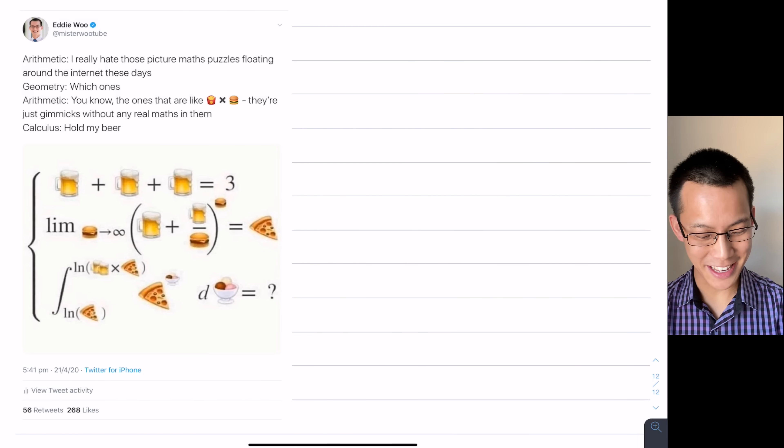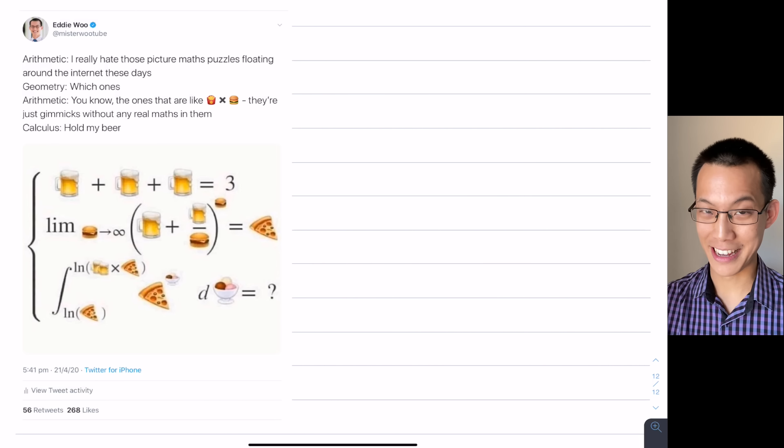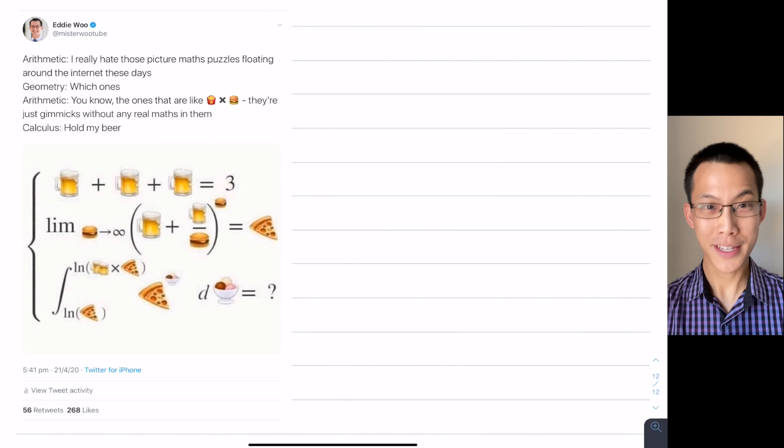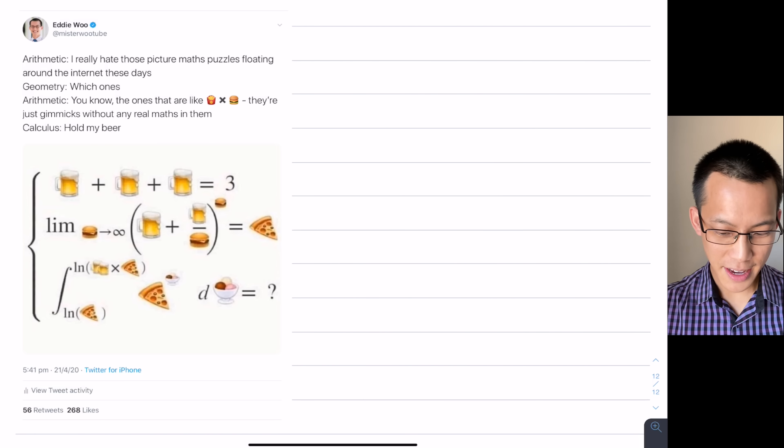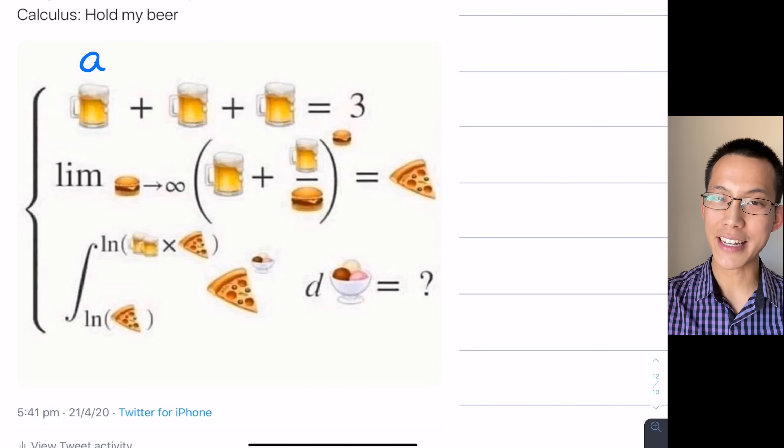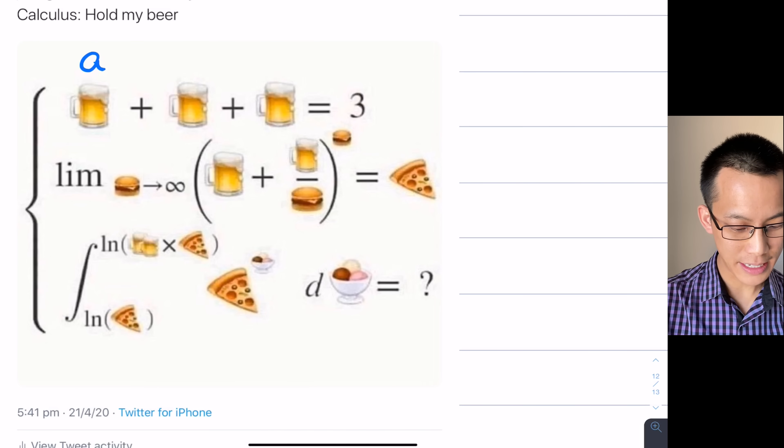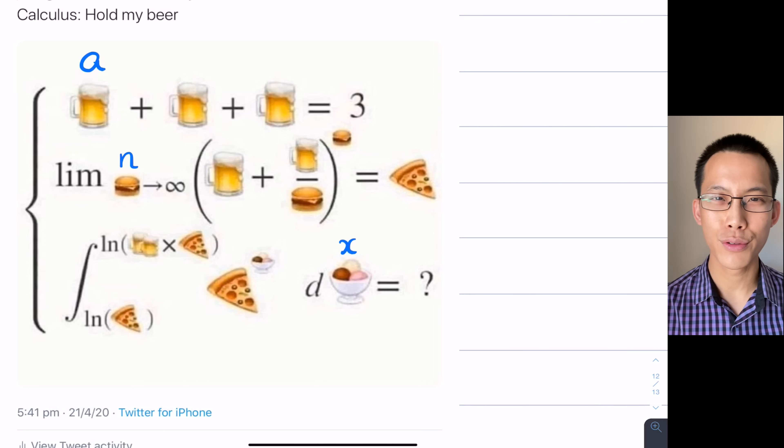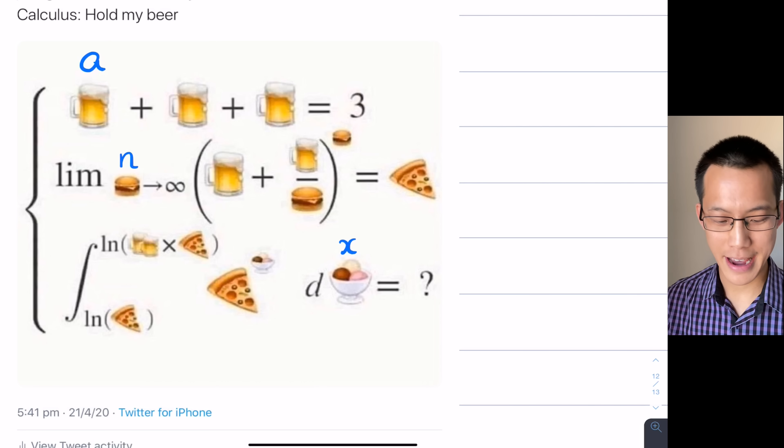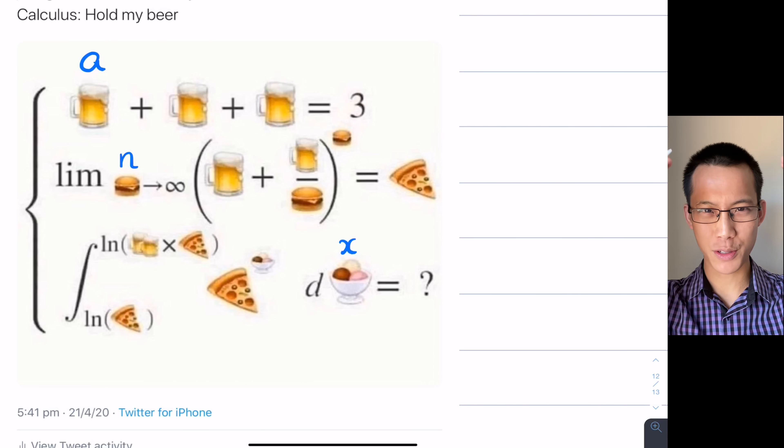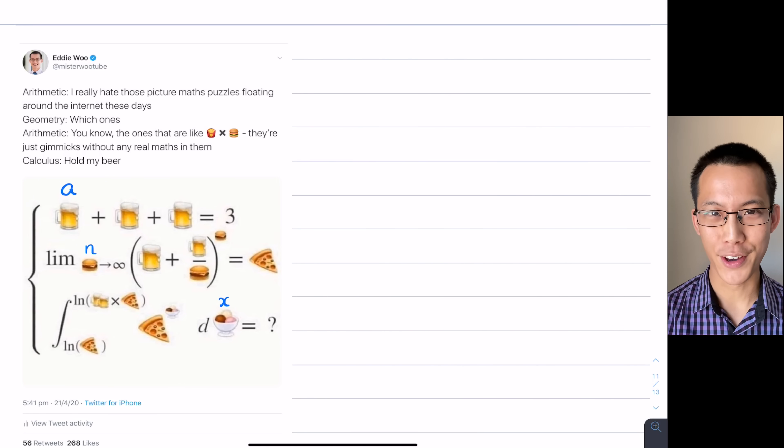Now to start with, what I'm going to do is rather than see all this emoji here, I am going to be like a normal mathematician. I'm going to replace all these symbols with much simpler symbols. Instead of the beer icon, I'm going to use the letter A. Instead of the hamburger, I'm going to use the letter N. Instead of that ice cream you can see down the bottom, I'm going to use the letter X. And I'm not going to ascribe a letter to the pizza just yet.